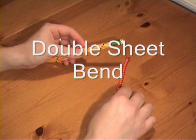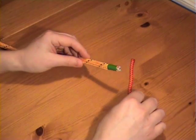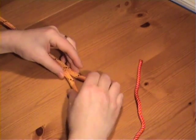If the ropes are of different thickness, we use a double sheet bend. Form the initial loop with the thicker piece of rope.